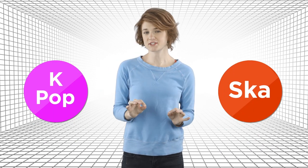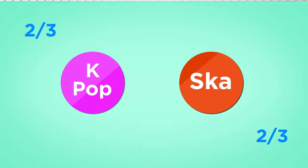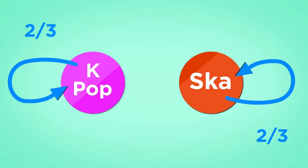A super weird radio station plays two kinds of music, K-pop and ska. These are the states of the Markov chain. Two thirds of the time, the next song is the same genre as the song that's currently playing. And the other one third of the time, it switches genres. That's the probability transition function indicated by the arrows.